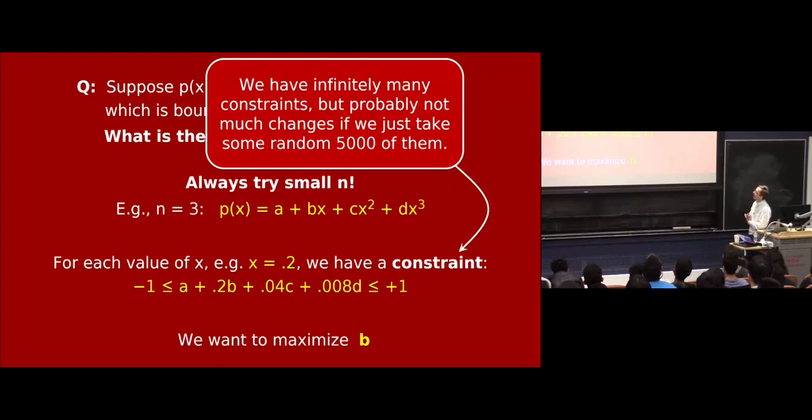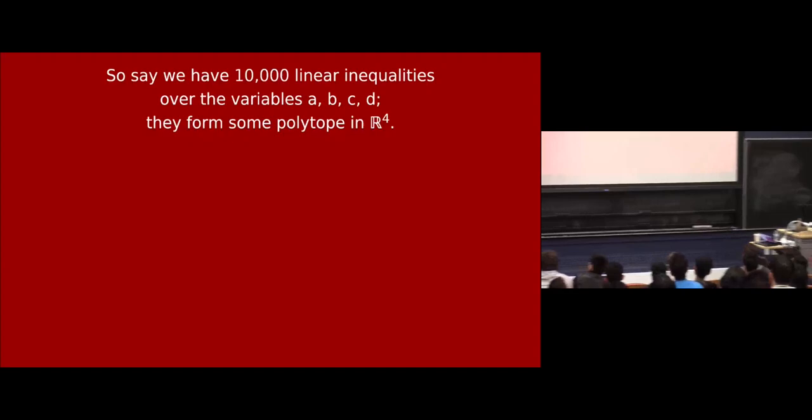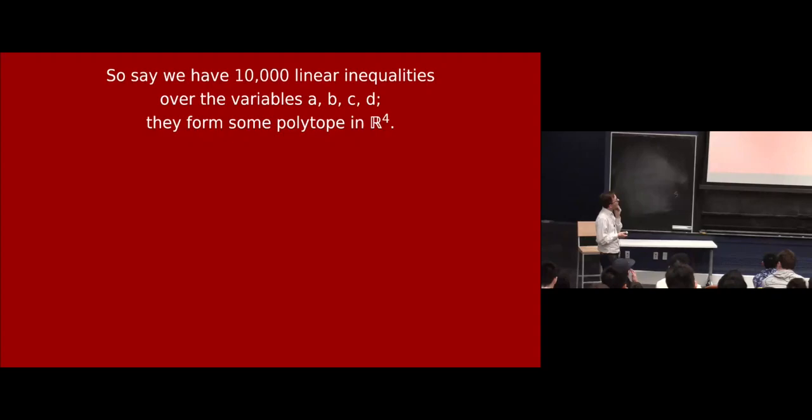And so then if, let's say, you pick 5,000 numbers, real numbers, x between minus 1 and 1, and you plug them into the polynomial, you get two inequalities for each one. So you would have 10,000 linear inequalities involving these four variables, a, b, c, and d, constraining them. And you're wondering how big b can be. And actually, if you know some TCS, you may know that what we really have here is a linear program.